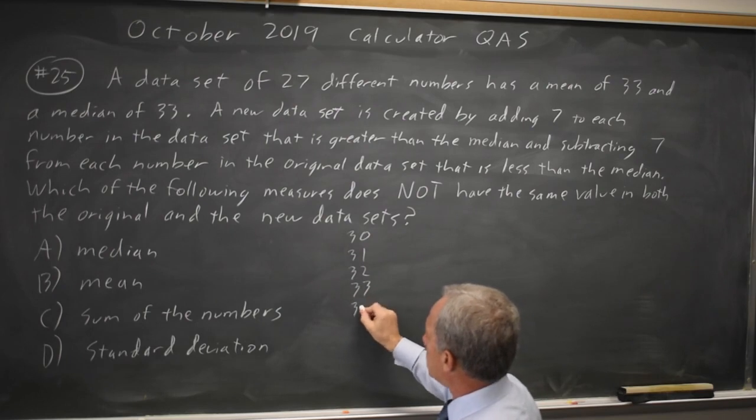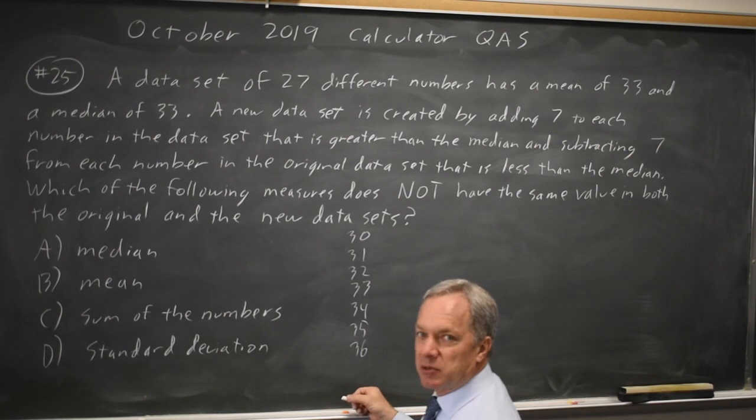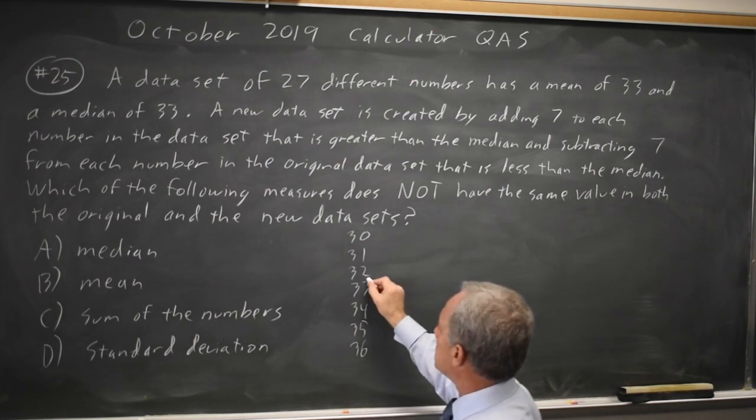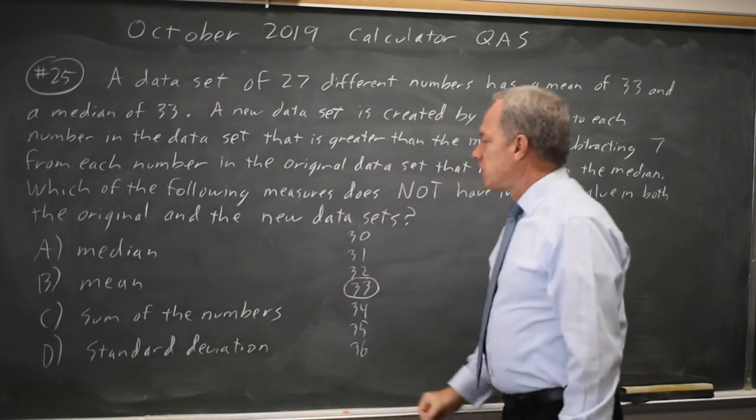And 3 numbers greater: 34, 35, and 36. They never said they were consecutive integers, but they didn't say they're not consecutive integers, so I'm going to make it consecutive because that's prettier and easier. 33 is clearly the mean and the median for these numbers.